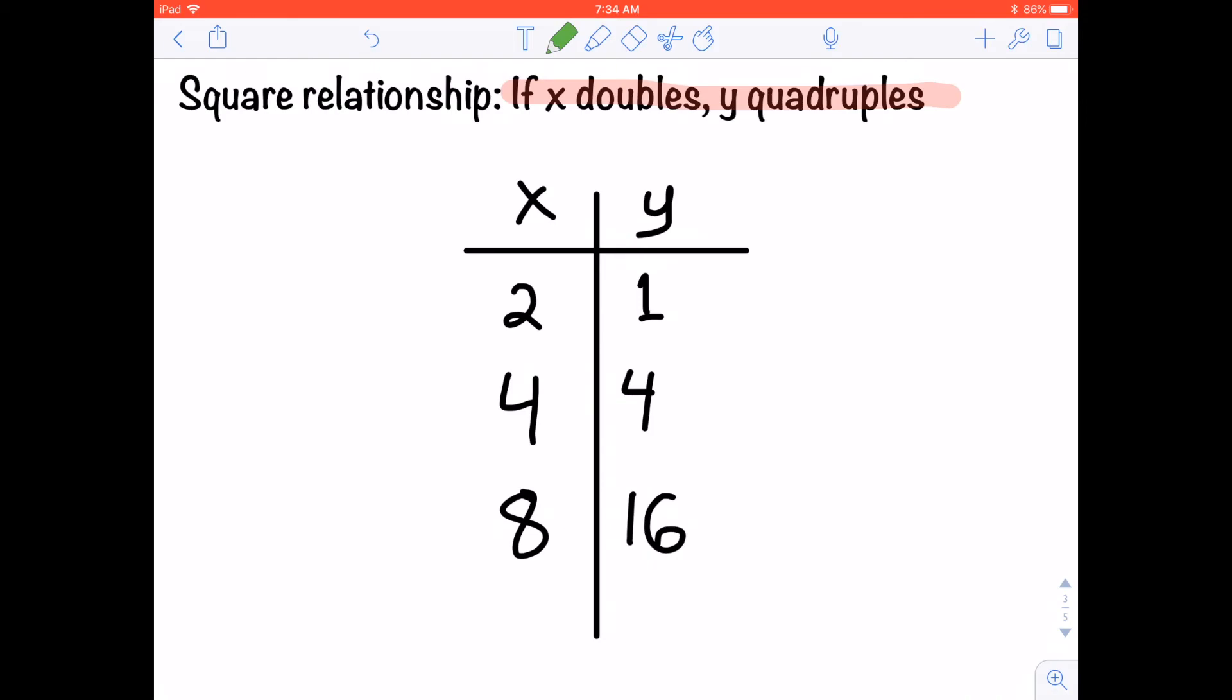So let's take a peek at this data set right here. We can see that x is definitely doubling. That makes sense. 2 times 2 equals 4. 4 times 2 is 8. And y is certainly quadrupling. 1 times 4 is 4. And 4 times 4 is 16. So, looking at a data set, it's pretty easy to see a pattern here where as x doubles, y quadruples.